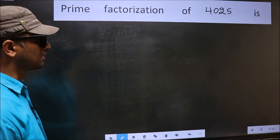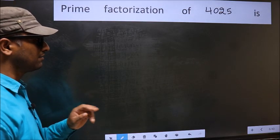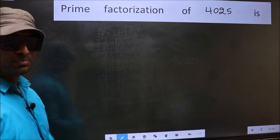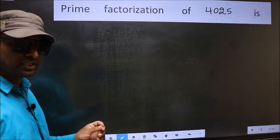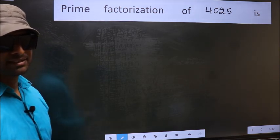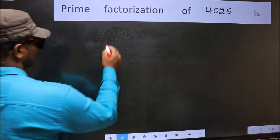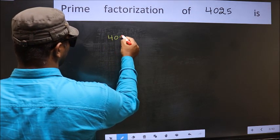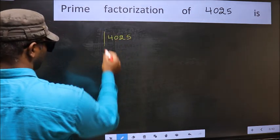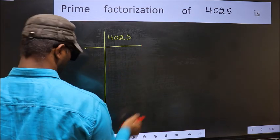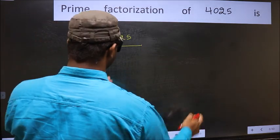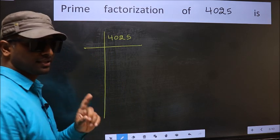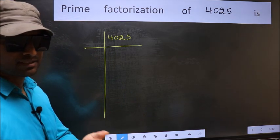Prime factorization of 4025. To do prime factorization, first we should frame it in this way. 4025. This is your step 1.